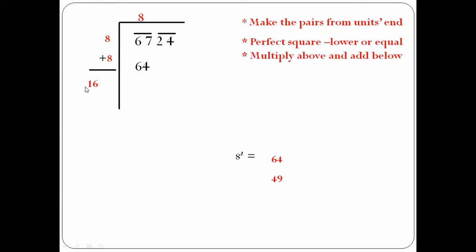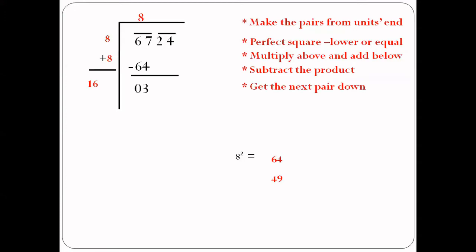The next step is to subtract the product. We subtract 64 from 67 to get 3. Then we bring down the next pair, which is 24, to get the number 324.